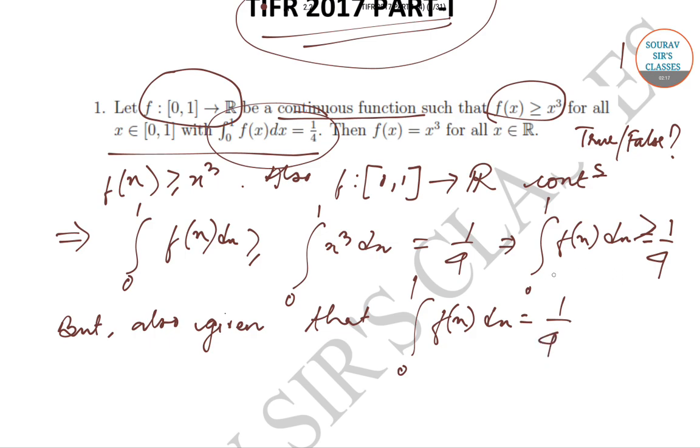If we take the earlier inequality as relationship (1) and the next as relationship (2), then (1) and (2) imply that ∫₀¹ f(x)dx = 1/4.